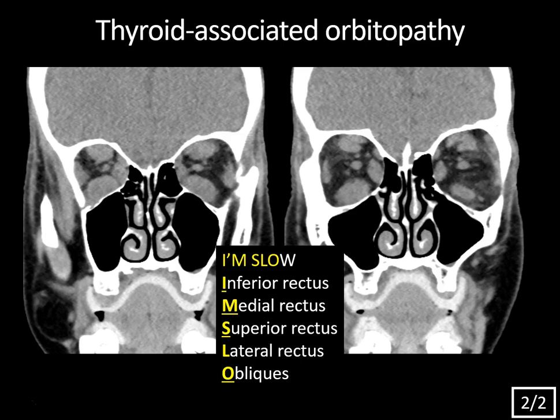If you ever see isolated thickening of the lateral rectus with normal inferior, medial, and superior rectus muscles, it's probably not thyroid-associated orbitopathy — it may be another differential consideration such as orbital pseudotumor. That pathology will typically also involve the tendinous insertion of the extraocular muscle, and when acute you'll get inflammatory fat stranding within the intraconal fat. This can be self-limiting but may be treated with steroids, and when severe might require surgical decompression.